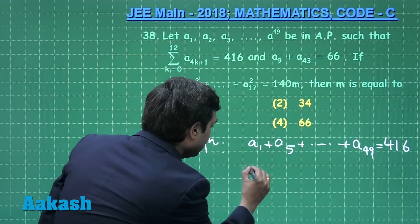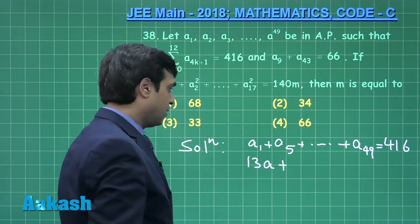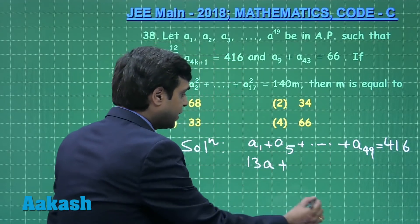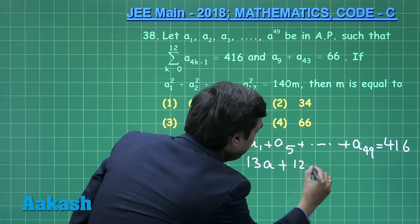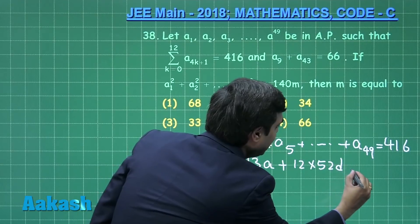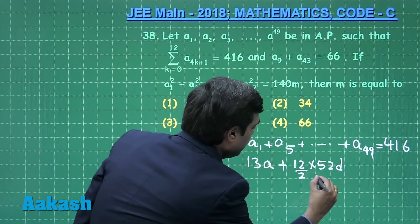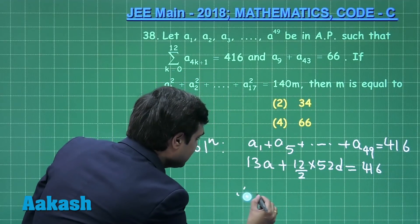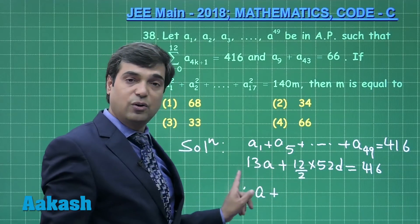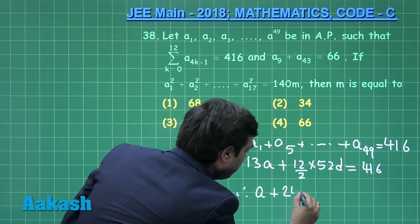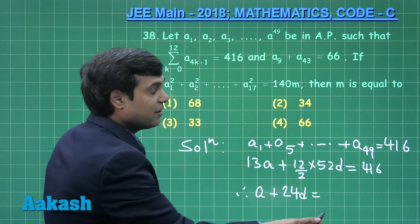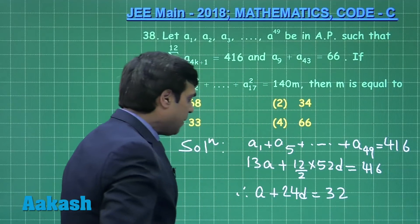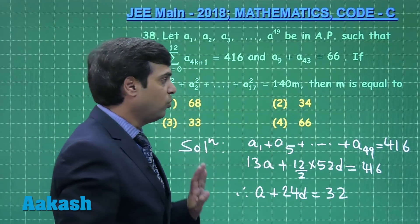We can see that this is simply 13(a + 4d + 8d + ... + 48d) which gives us 13 × (12 × 52d)/2 = 416. Therefore, we can see here we can take 13 common, a + 24d equals divide by 13 to the right side, that gives you 32. So a + 24d = 32, one equation is obtained.